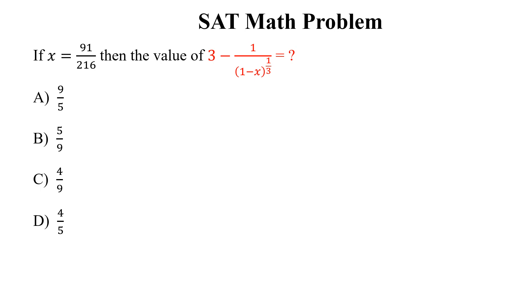Let's begin to solve the question. The question is: if x equals 91 divided by 216, then what is the value of 3 minus 1 over (1 minus x) to the power 1/3? What is the correct option? How can we solve this? The trick is,